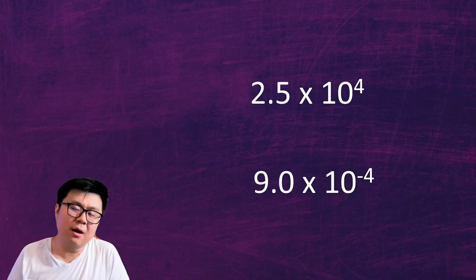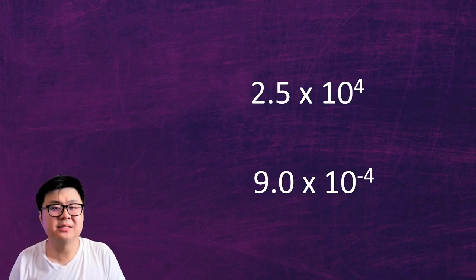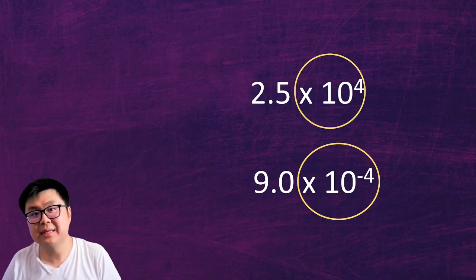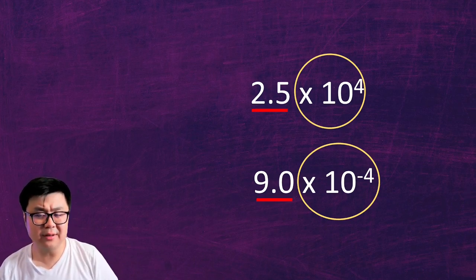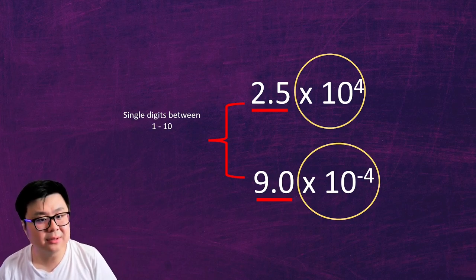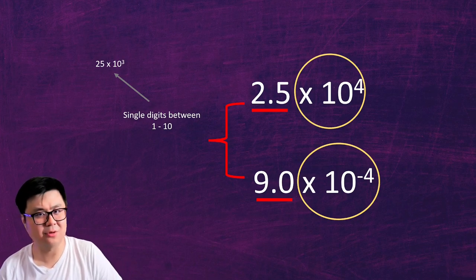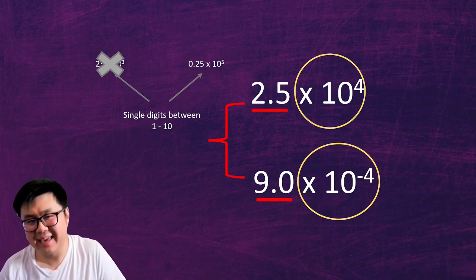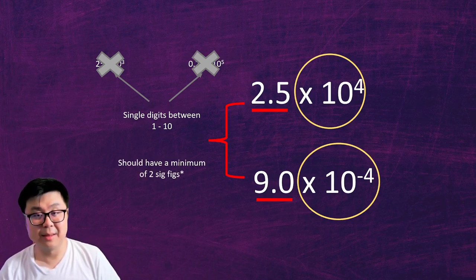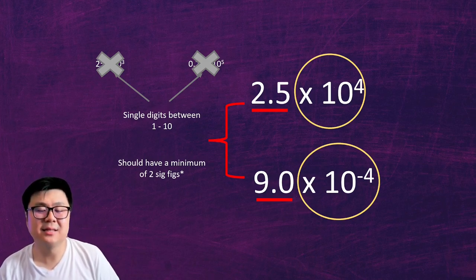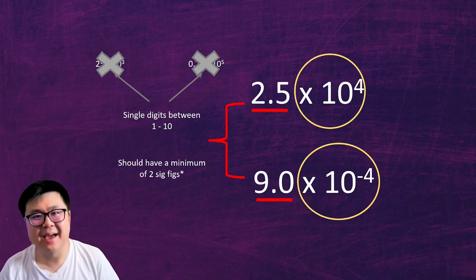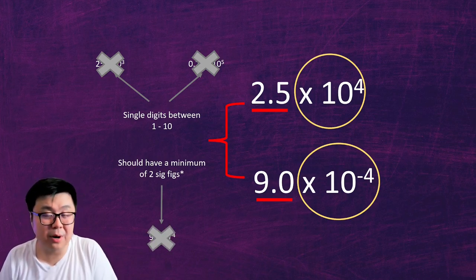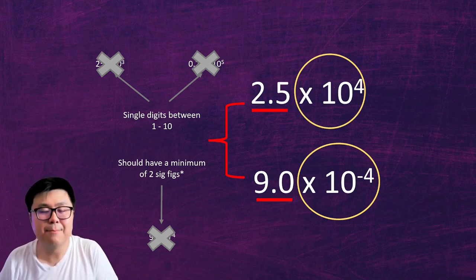Let's now talk about scientific notation. On screen I have two numbers written in scientific notation, and you can see they both share a times 10 to the power of something. The exponent can be positive or negative, but it must be times 10 to the power of something. Looking at the number in front of the times 10, it has to be a single digit between 1 to 10 — so you can't have something like 25 times 10 to the power of 3, or 0.25 times 10 to the power of 5. As a good habit, always try to keep the number in front a minimum of two sig figs.